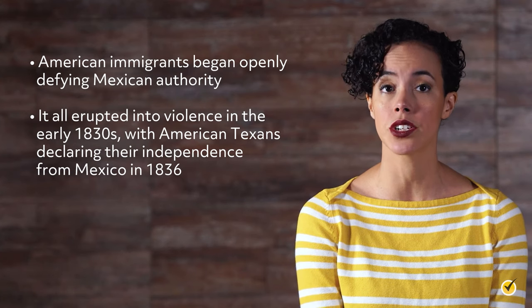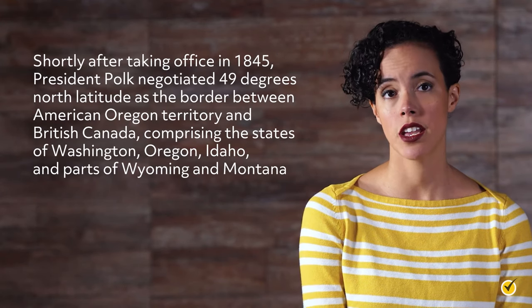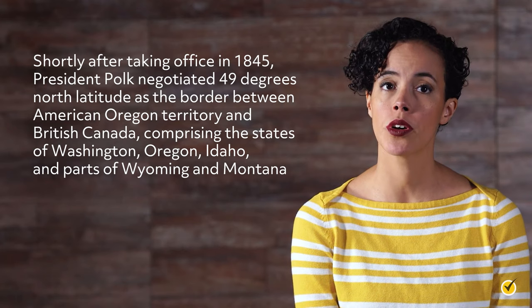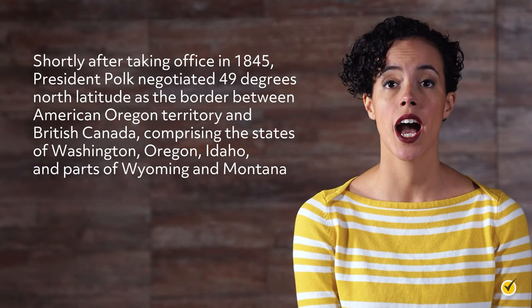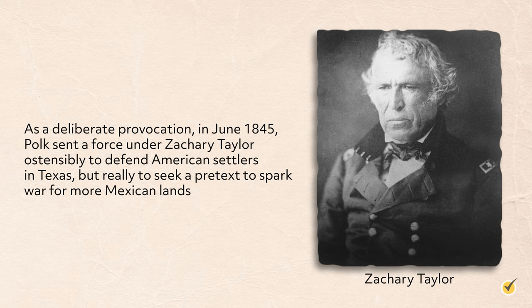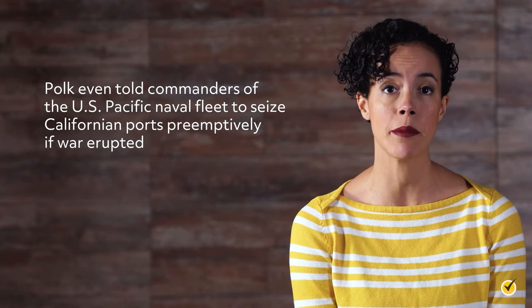The Mexican government had encouraged settlement in its territory of Texas using land grants, and American settlers soon came flooding in. However, these American immigrants began openly defying Mexican authority, and it all erupted into violence in the early 1830s, with American Texans declaring their independence from Mexico in 1836. Shortly after taking office in 1845, President Polk negotiated 49 degrees north latitude as the border between American Oregon territory and British Canada — comprising the states of Washington, Oregon, Idaho, and parts of Wyoming and Montana. He then set his sights on Mexico's territory to the west of Texas, and as a deliberate provocation sent a force under Zachary Taylor ostensibly to defend American settlers in Texas, and even told commanders of the U.S. Pacific naval fleet to seize Californian ports preemptively if war erupted.